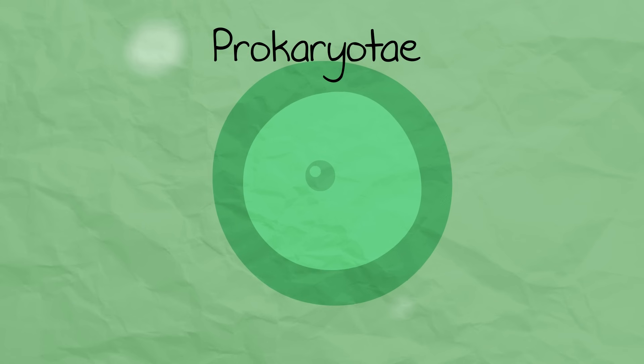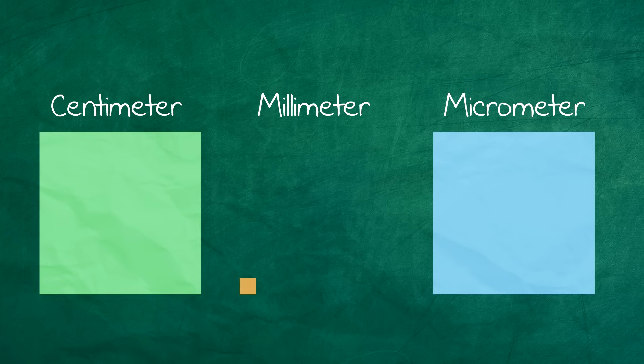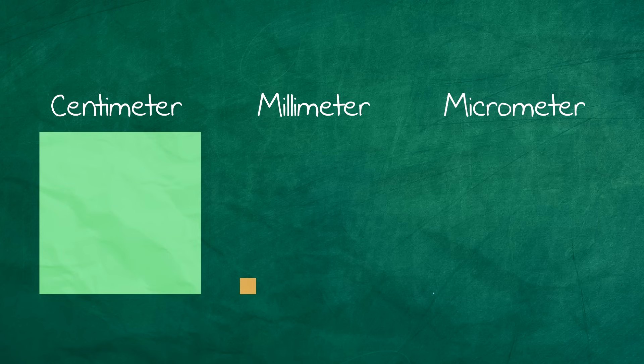And finally, the Prokaryota kingdom. They are unicellular. They lack organelles that are seen in eukaryotes. They are typically really small, about 10 micrometers in size, much too small to see with the human eye.